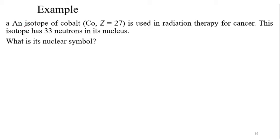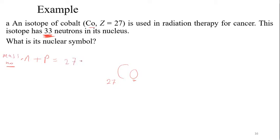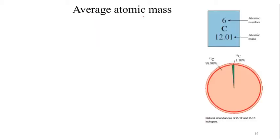Example: cobalt, which is used in radiation therapy for cancer, has an isotope with 33 neutrons in the nucleus. What is the nuclear symbol? I write Co in the middle (capital C, lowercase o). The atomic number Z is 27, written at the bottom. Since I'm given the number of neutrons, I add protons plus neutrons to get the mass number: 27 + 33 = 60.